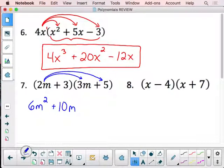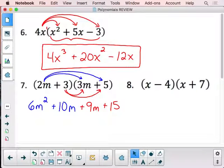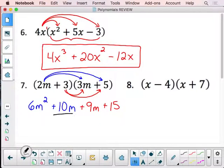Then we come back and now we're going to distribute the 3 times both the 3m and the 5. So 3 times 3m is 9m. And 3 times 5 would give us the 15. Now if we didn't have any like terms, we'd be done.